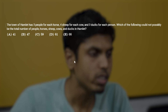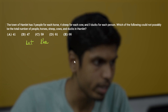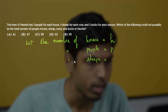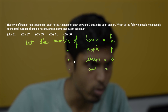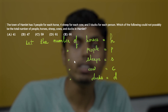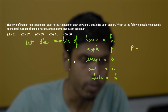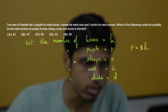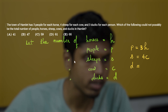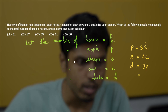First, let's define variables. Let h be the number of horses, p the number of people, s the number of sheep, c the number of cows, and d the number of ducks. Based on the given constraints, we write the relations: p equals 3h, s equals four times the number of cows, and the number of ducks equals three times the number of people.